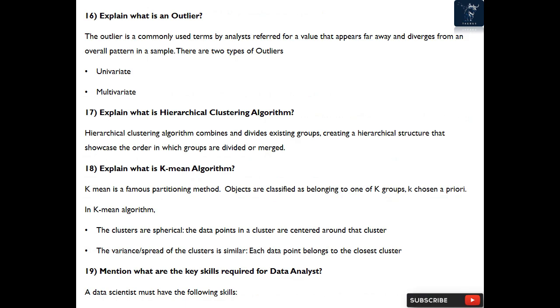Question 18: Explain what is k-means algorithm? K-means is a famous partitioning method. Objects are classified as belonging to one of k groups, k chosen a priori. In k-means algorithm, the clusters are spherical, the data points in a cluster are centered around that cluster, the variance/spread of the clusters is similar, each data point belongs to the closest cluster.